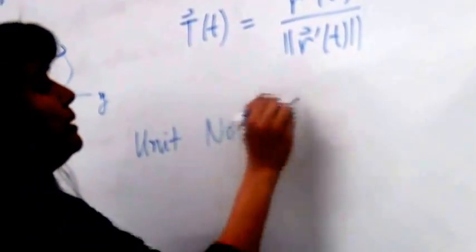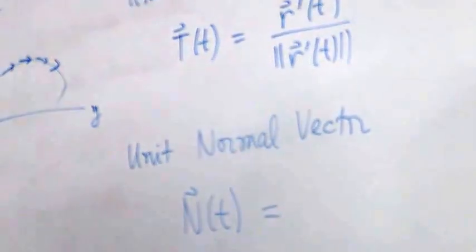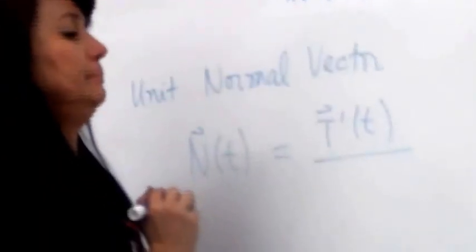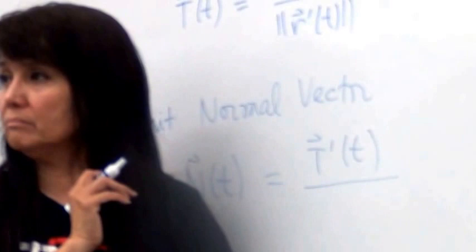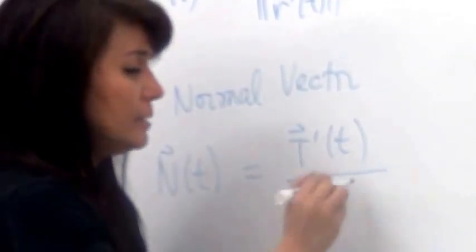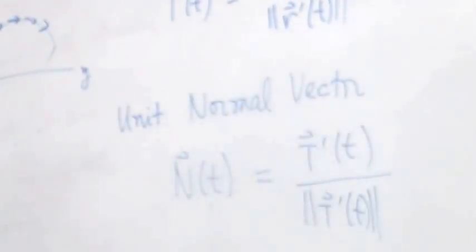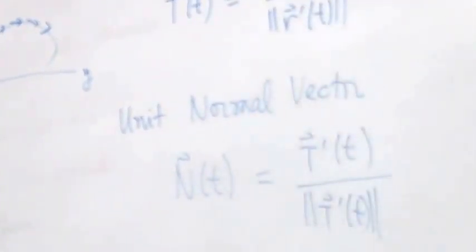The other vector we will use is the unit normal vector, which we denote by N of t. It's defined as the derivative of the unit tangent vector. But if you differentiate the unit tangent vector, you're not guaranteed the derivative will have magnitude one. So to make sure it's one, we divide by the magnitude of T prime. For today, I'll be happy if we can just go through the motion of this, and draw a picture of what's happening to T and N.